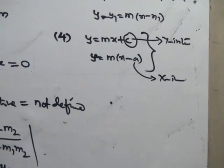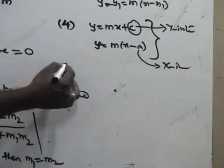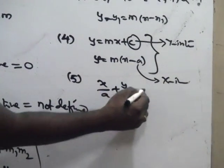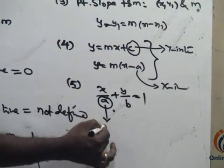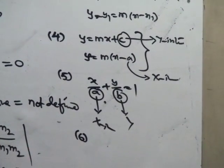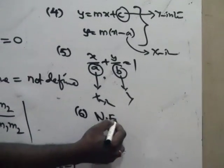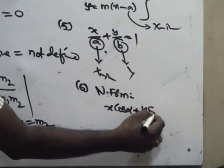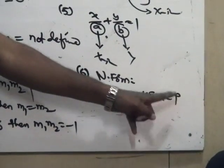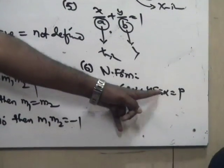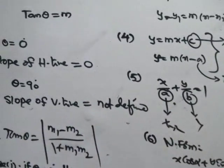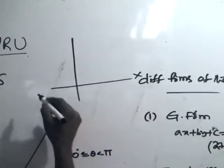These two equations are both slope-intercept forms. The fifth form is the intercept form: x/a + y/b = 1, where a is the x-intercept and b is the y-intercept. The sixth form is the normal form: x·cos(alpha) + y·sin(alpha) = p, where p is the perpendicular distance from the origin to the line and alpha is the angle made by the normal with the x-axis.